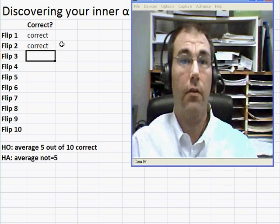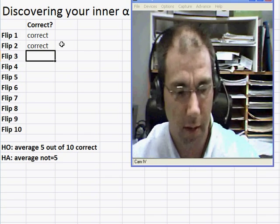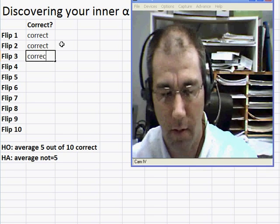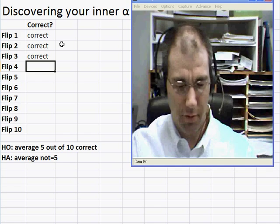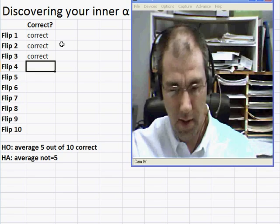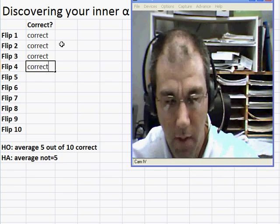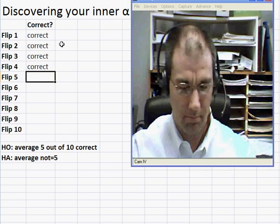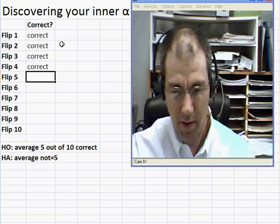Third one, I'm going to guess heads. The third one is heads, correct as well. Experiment trial number four, this one also heads. That one is heads, correct. Fifth flip, tails is my prediction. That one is tails.